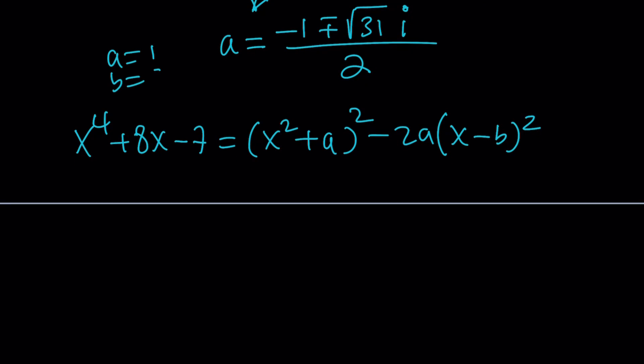So now, x to the 4th plus 8x minus 7 can be factored as x squared plus 1 squared minus 2 times x minus 2 squared. And if you go ahead and check it out, you're going to realize that it actually works. One good point here is, is this structure type of factoring always going to work?